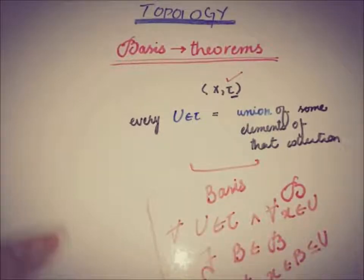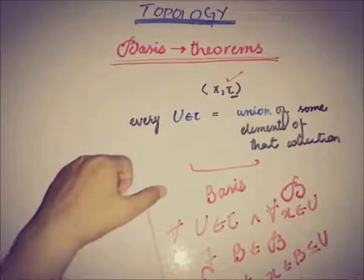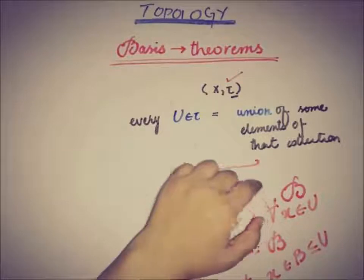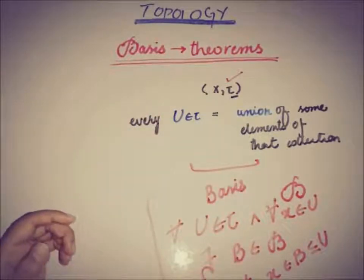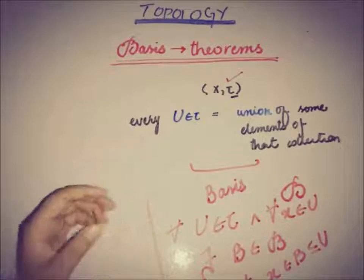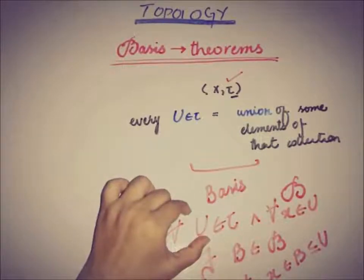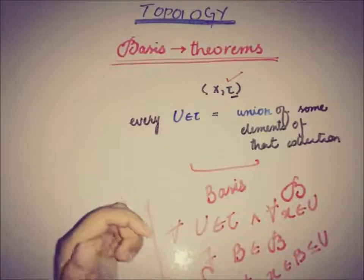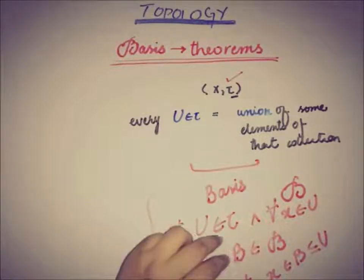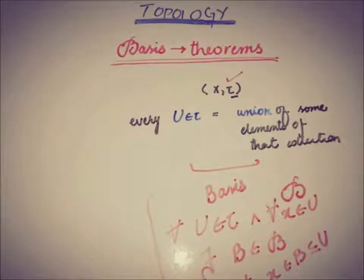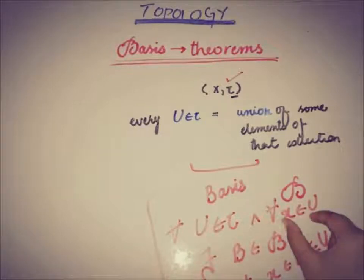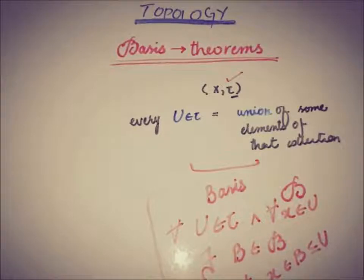So this is a condition extracted from the definition of basis. If (X, τ) is a topological space, then a collection B of subsets of X is a basis of topology τ if and only if for all elements U of τ, there exists a member B from the basis such that x belongs to B and B is a subset of U.